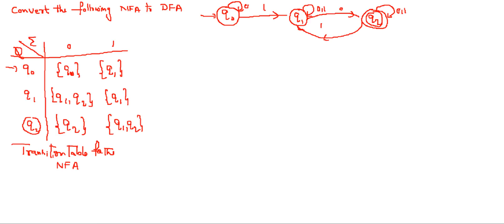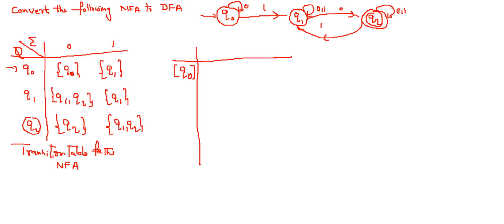Now from this transition table, you have to construct the transition table for the DFA. First of all, you need to identify the initial state for the DFA. Whatever is the initial state in NFA, the same initial state will be applicable to the DFA also. Just to differentiate NFA and DFA, we are representing the states with square brackets. The input symbols are 0 and 1.